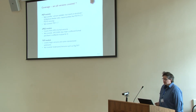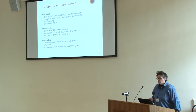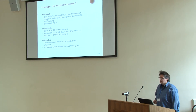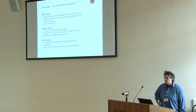It looks better for the JPEG and TIFF modules — coverage there is pretty good. All JPEG format versions are covered; JPEG 2000 is not, but that's expected as it's a completely different format with its own JOV module. For TIFF, the major versions are covered; not covered are a few extensions such as BigTIFF, which is a more recent development. We had to limit scope, settling on PDF, JPEG, and TIFF as the most common formats in most archives.